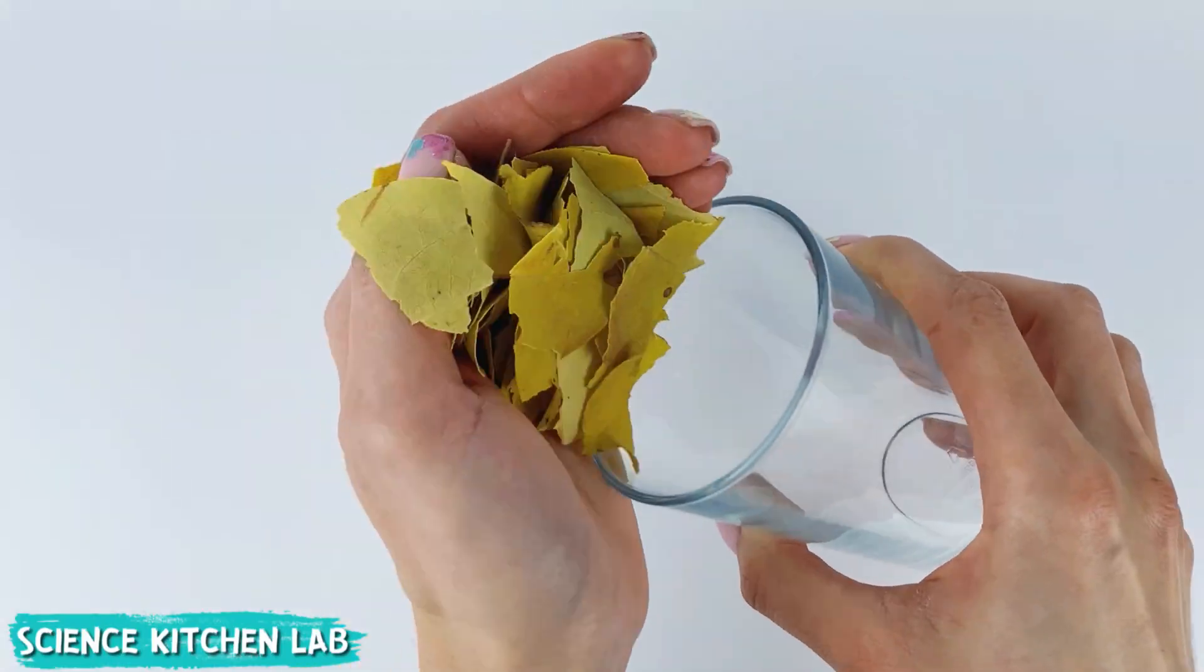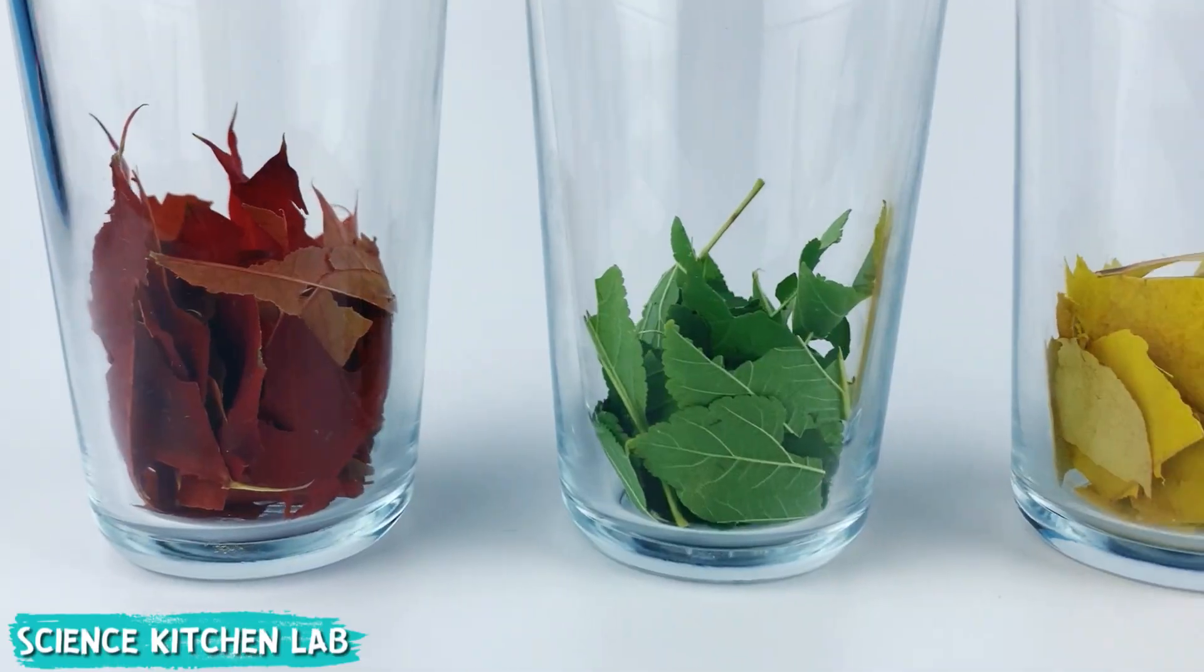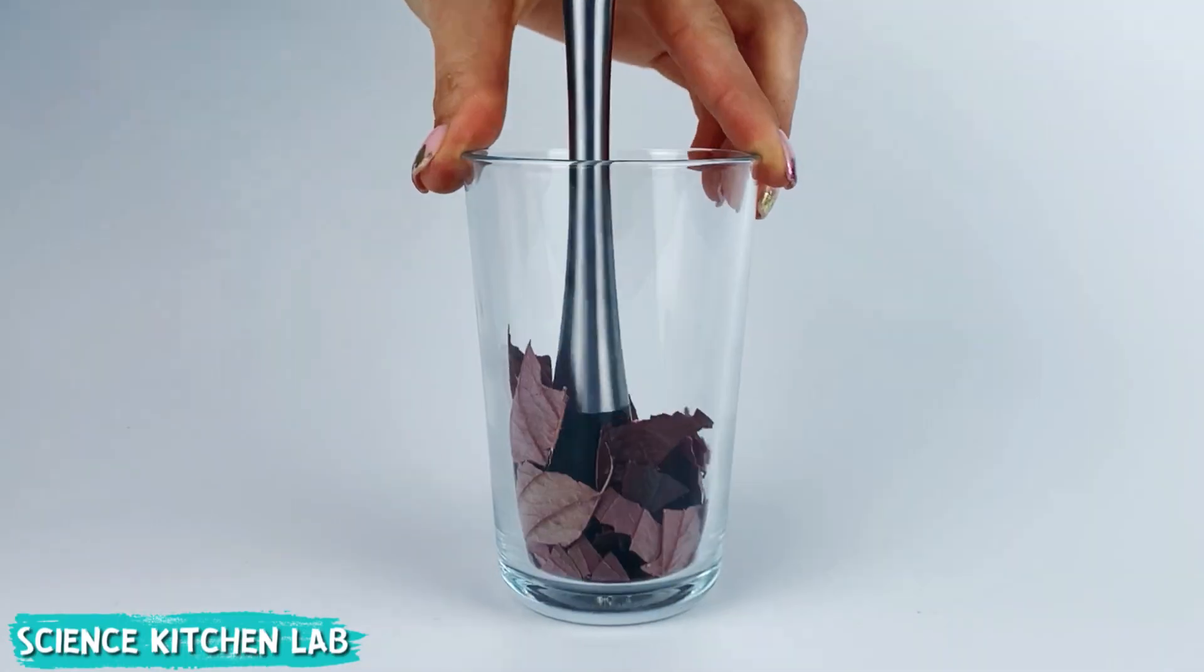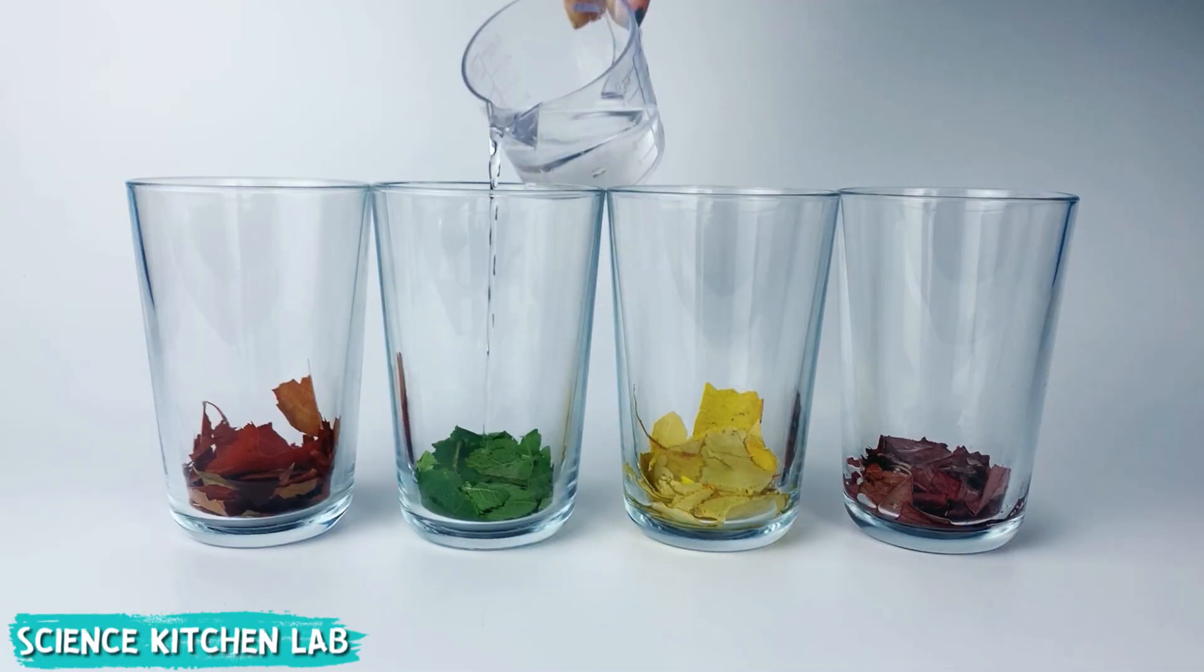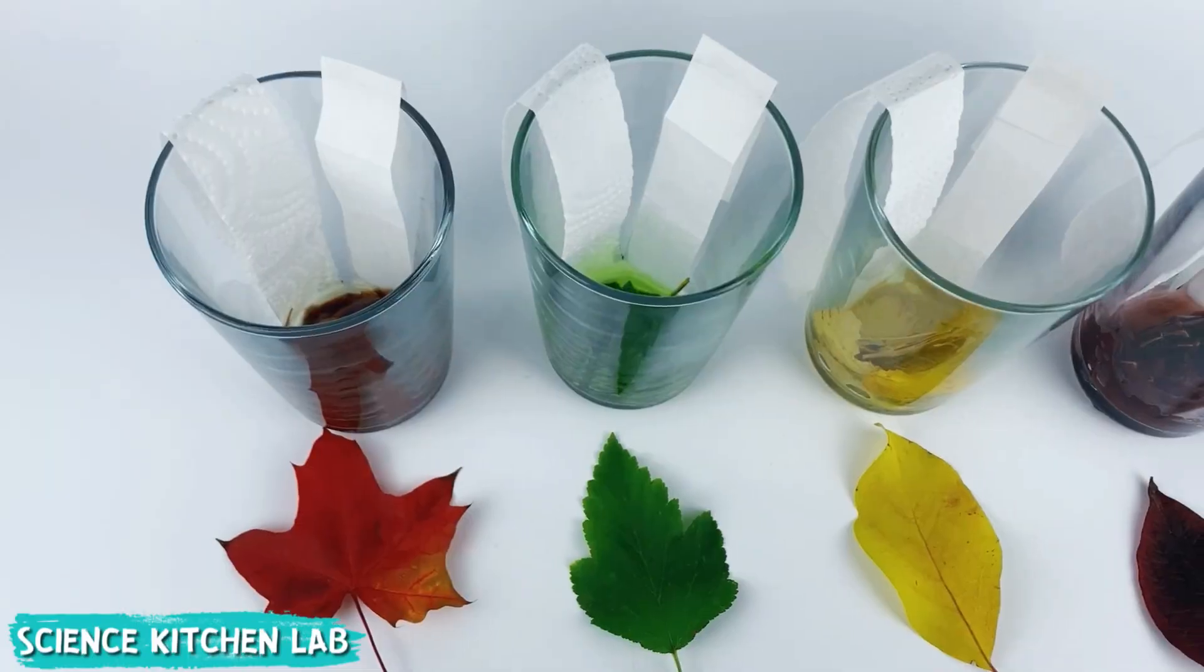Today we'll peek inside the leaves to see their hidden pigments. We tear colorful leaves into small pieces, carefully grind them in different glasses, add a little alcohol to each glass, place them in a bowl of hot water, and insert paper strips.